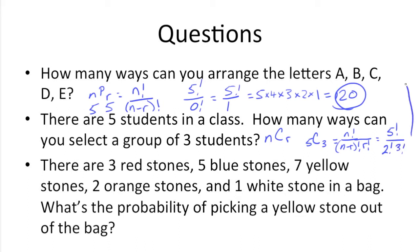What we can do before we calculate this is some reducing. The top is equivalent to that, the bottom, 2 factorial, is 2 times 1. 3 factorial is 3 times 2 times 1. Since we have 3 times 2 times 1 down here and up here, we can reduce them out.